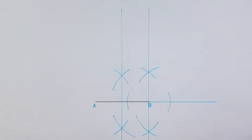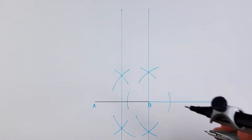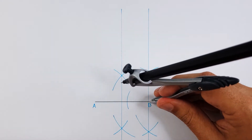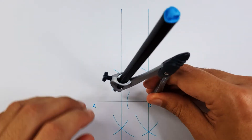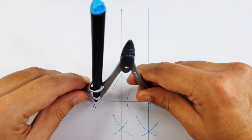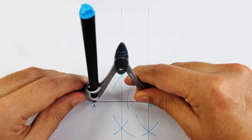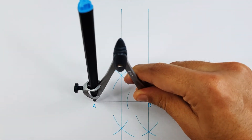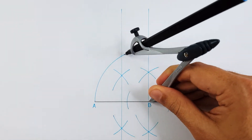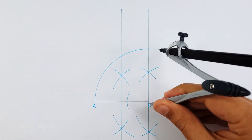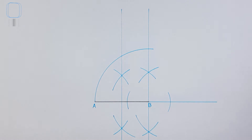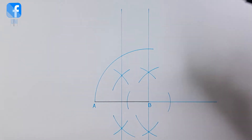Place your compass on point B and adjust it to the full length of the side. Project point A onto your perpendicular line. Label the intersection as point C.